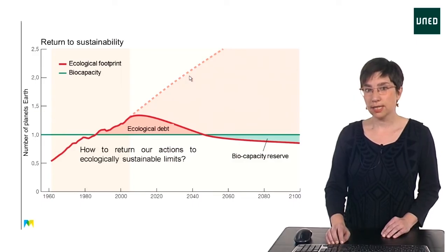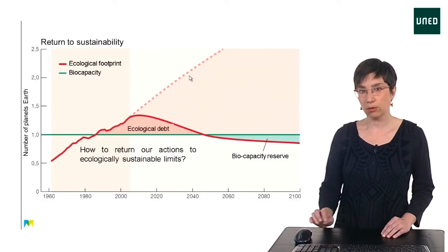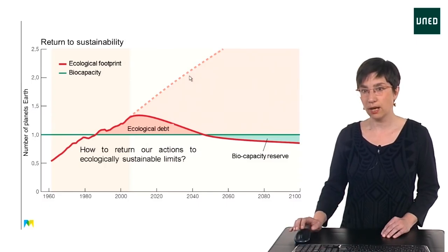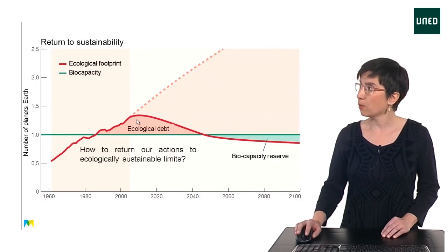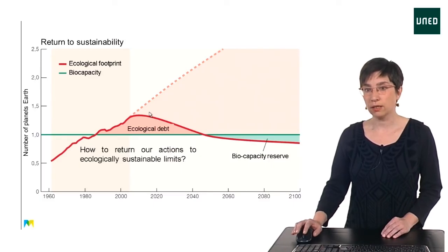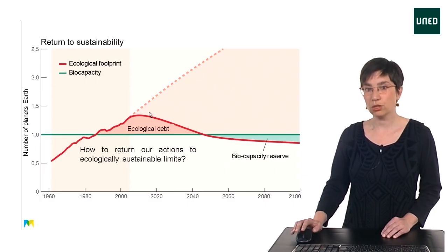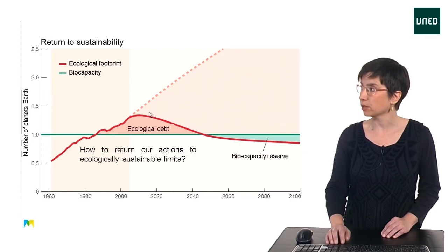None of the necessary changes have yet been made. Today, humanity uses the equivalent of 1.7 Earths to provide the resources we use and to manage our waste. We use more ecological resources and services than nature can regenerate, and we mainly do it through overfishing, overharvesting forests, and emitting more CO2 than the system can absorb.